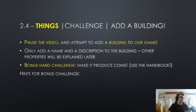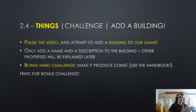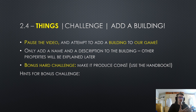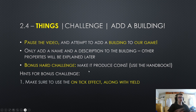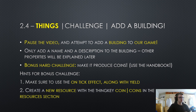With thing key syntax covered, let's move on to this video's challenge. Pause the video and attempt to add a building to our game — only add a name and a description. Other properties will be explained later in future episodes. If you're really up to it, attempt to make the building produce coins; you will need to use the handbook for that. First hint: make sure to use the on-tick effect along with yield. Second hint: create a new resource with the thing key 'coin' or 'coins' in the resources section.